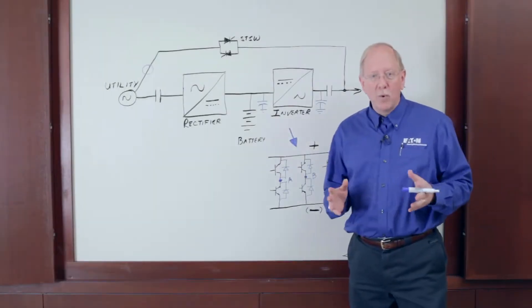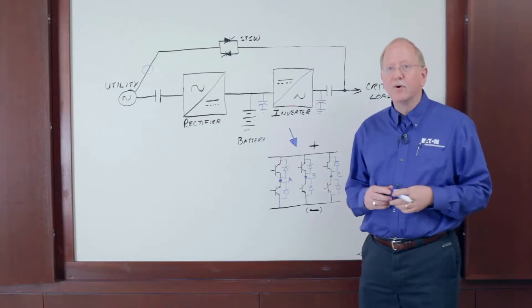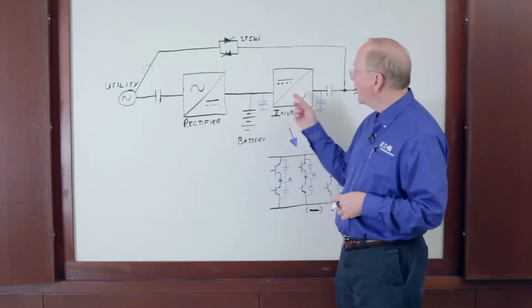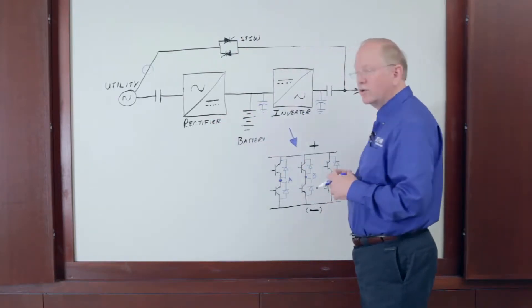So on the board here, we have a one-line diagram of a traditional double conversion UPS. The rectifier, the inverter, the static switch, and the critical bus output.